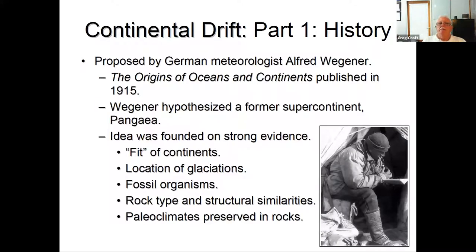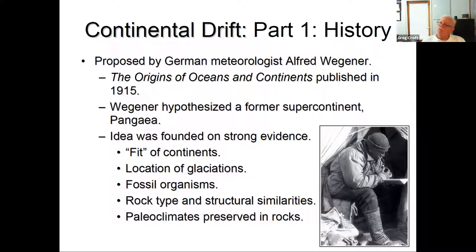The history really got launched in 1915 when a German meteorologist and geologist named Alfred Wegener published a book on origins of oceans and continents. He hypothesized a supercontinent called Pangea that broke up into the present-day continents. He had a lot of evidence: the fit of the continents, locations of ancient glaciations, distribution of fossil organisms, rock types and structural similarities, and climate evidence in the rocks indicating they were at a different latitude when deposited.